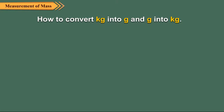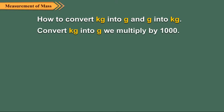Let us discuss how to convert kilogram into gram and gram into kilograms. To convert kilogram into gram, we multiply by 1000. For example, to convert 15 kilogram into grams, we multiply 15 by 1000.